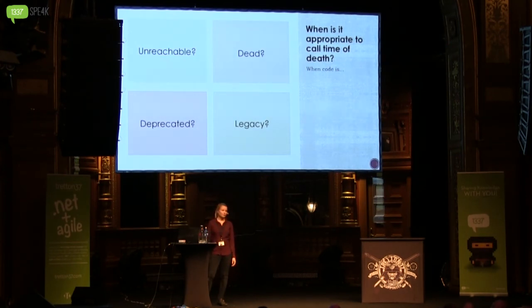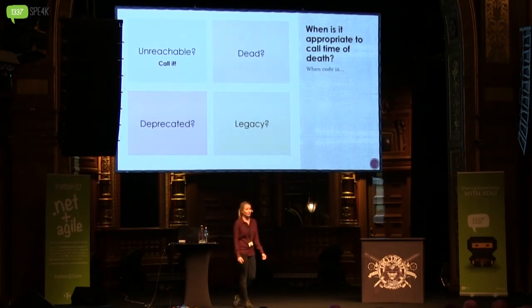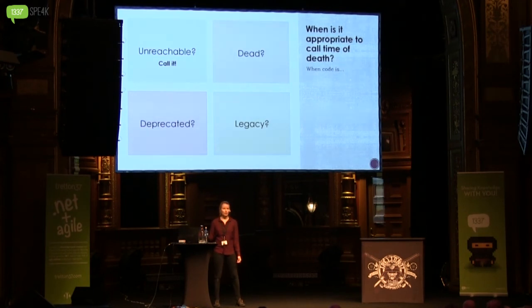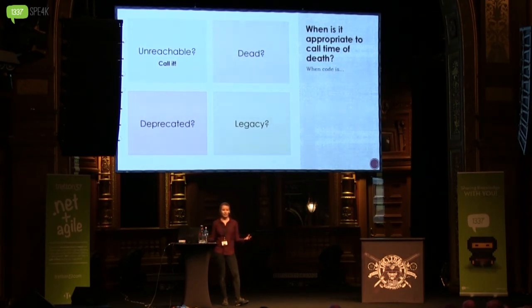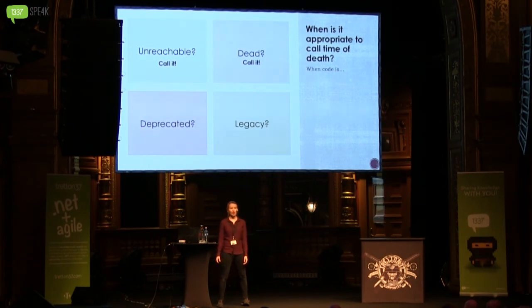Unreachable code is code that exists but is never executed — that's a complete waste. You should call time of death on unreachable code; there's no point in having code in your code base that is never executed. Dead code is different: dead code is actually executed, but the result of that execution is never used in any other computations — so you're doing lots of work and then not using it. Call time of death on dead code.